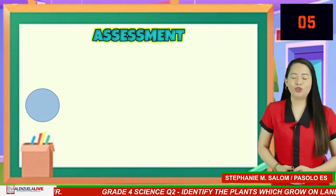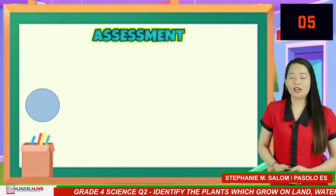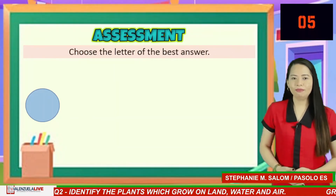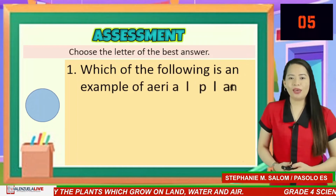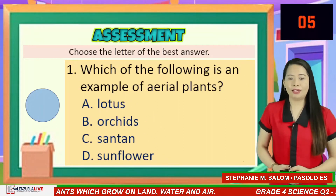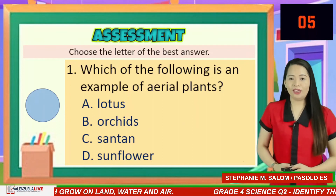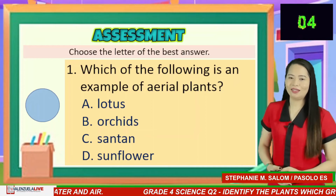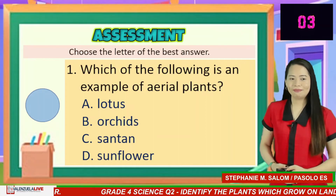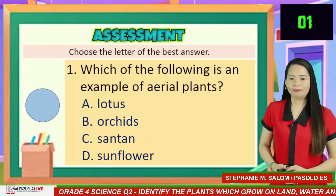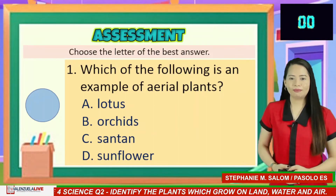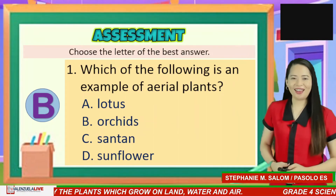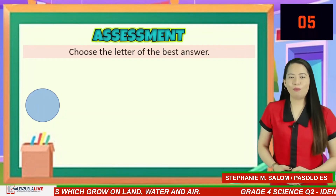For your assessment today, choose the letter of the best answer and type your answer in the comment box. Number 1: Which of the following is an example of aerial plants? A. Lotus, B. Orchids, C. Santan, D. Sunflower. You have five seconds to answer. If your answer is letter B — that's correct!